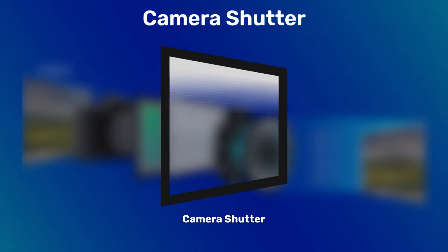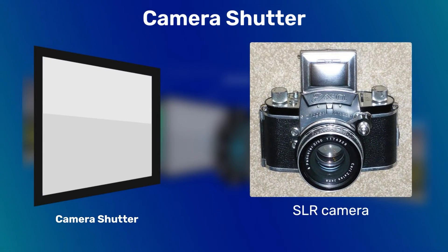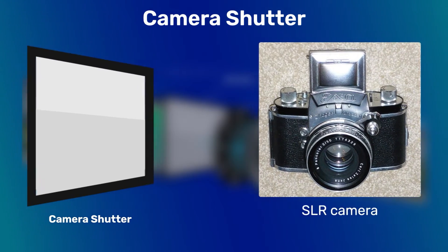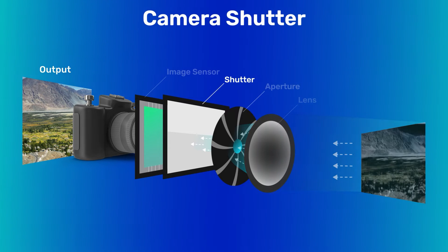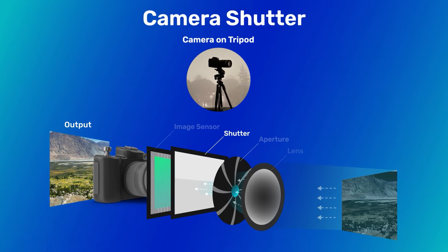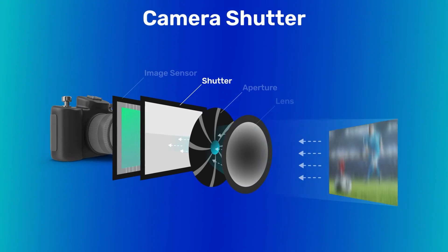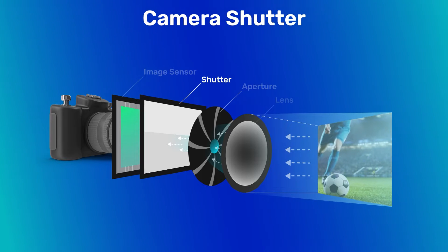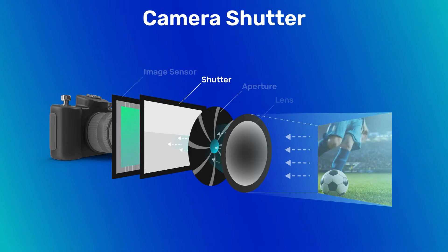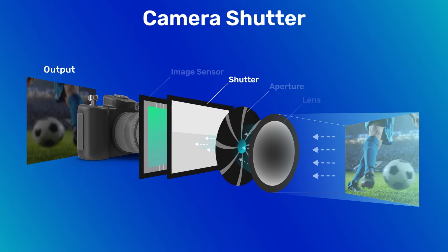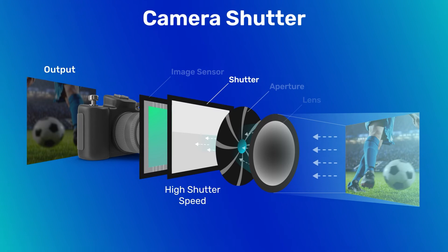Fortunately, the shutter speed in an SLR camera is adjustable. So if you want to photograph a landscape at night, you can set up your camera on a tripod and take a long exposure shot by opening the shutter for a long time. On the other hand, if you want to capture something moving fast like sports photography, you want to set your camera to a high shutter speed.